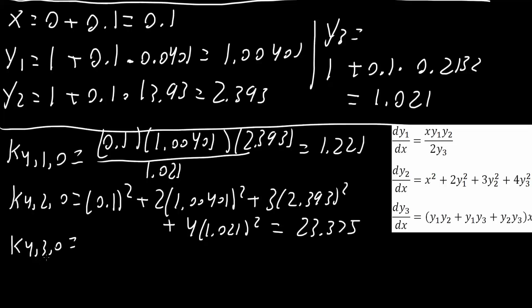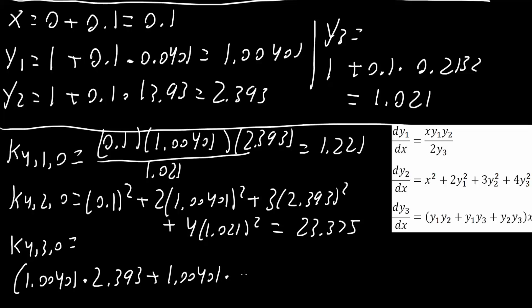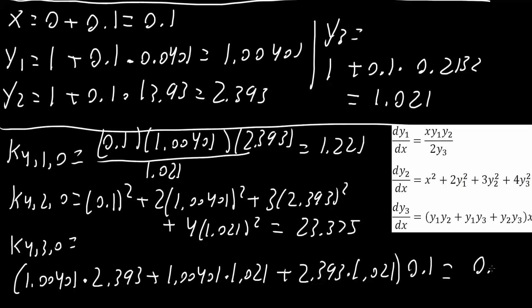Finally k4,3,0: 1.00401 times 1.021, plus 2.393 times 1.021, times x which is 0.1, giving 0.5871.